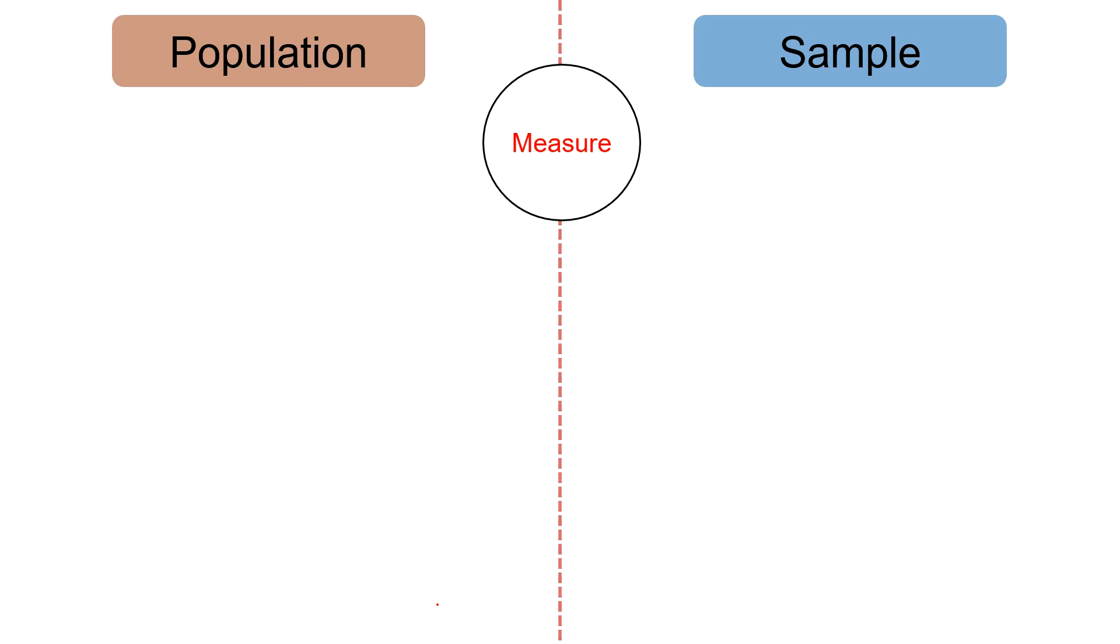Next, measure. A parameter is a number describing a whole population, i.e. population mean. As against, a statistic is a number describing a sample, i.e. sample mean.